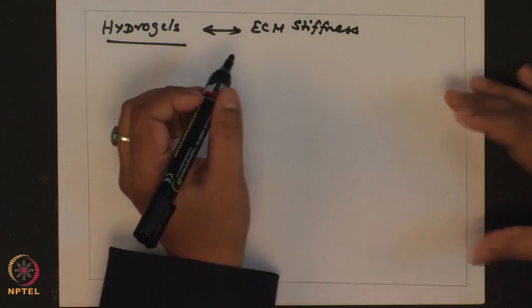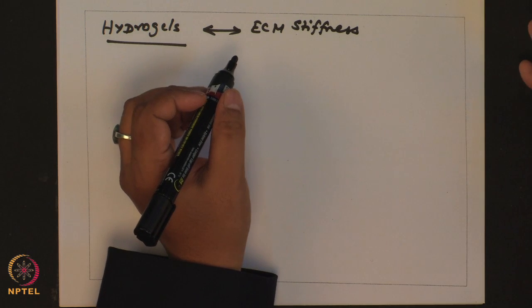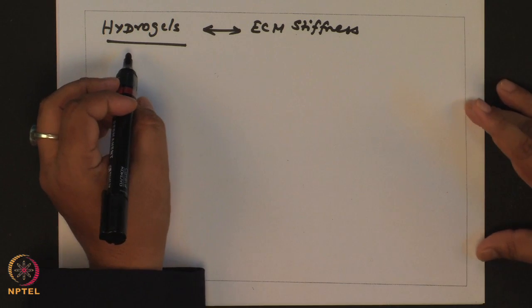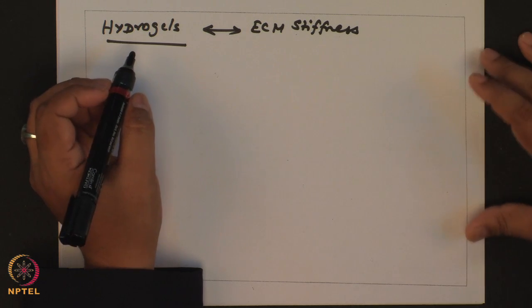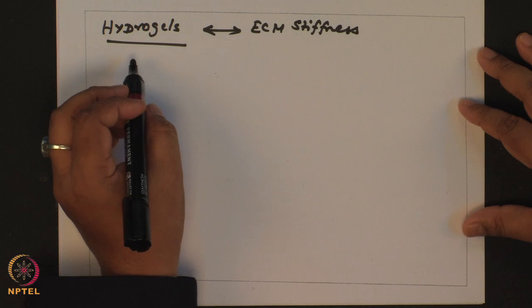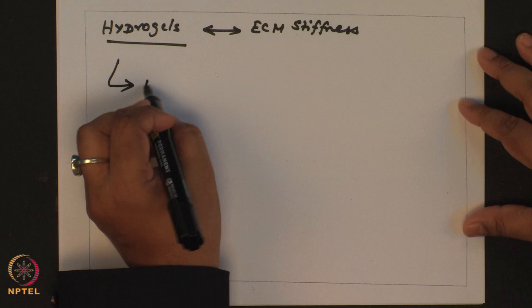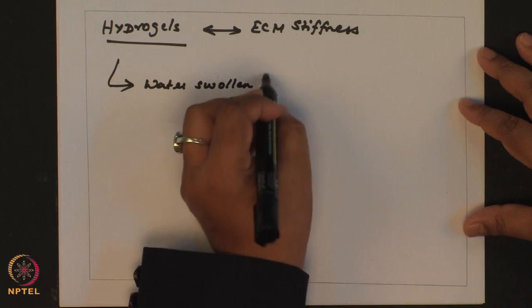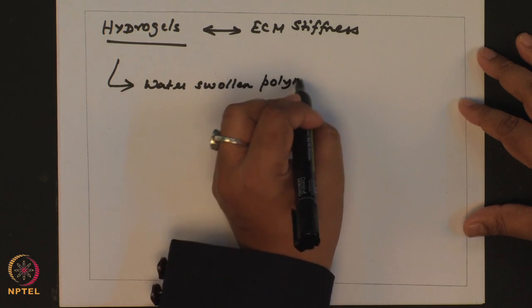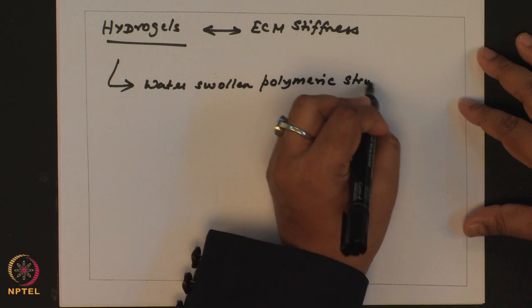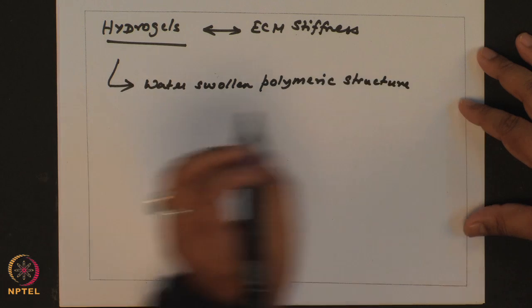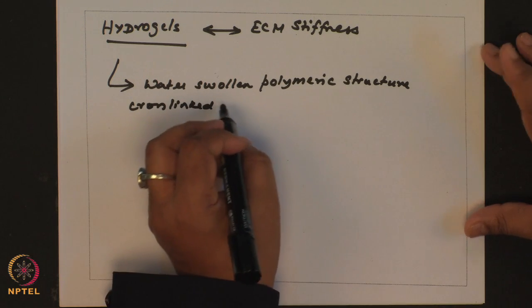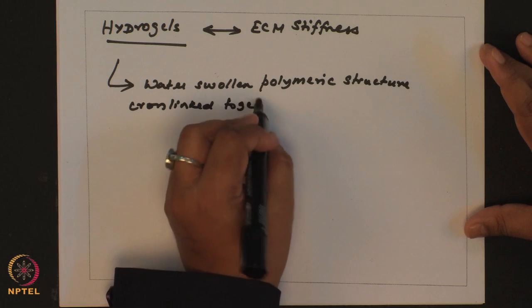Why is hydrogel important? Again because of its relation to ECM stiffness. In order to make substrates which mimic the bulk properties of different tissues, what you do is you make use of hydrogels. So that brings us to the question, what exactly is a hydrogel? Hydrogel is essentially a water-swollen polymeric structure, crosslinked together.